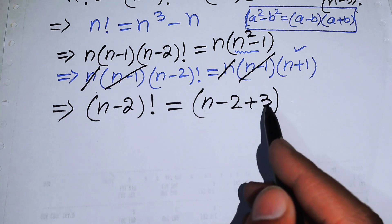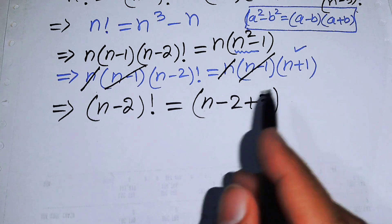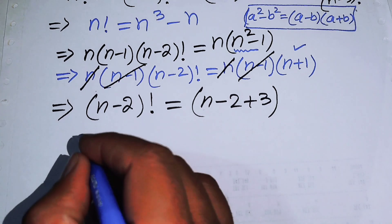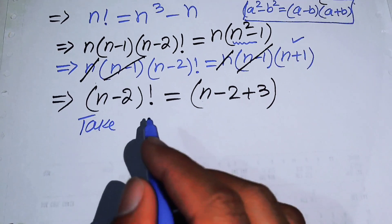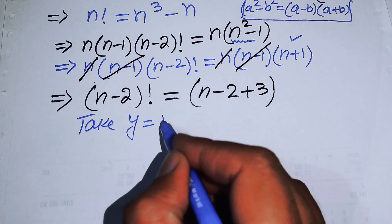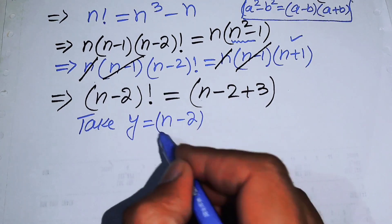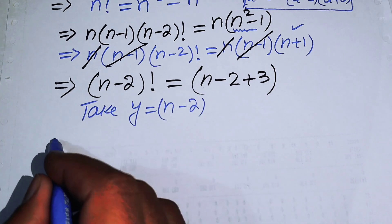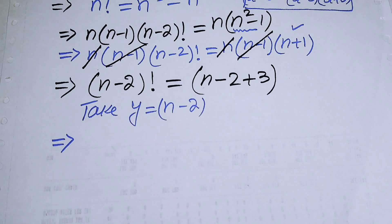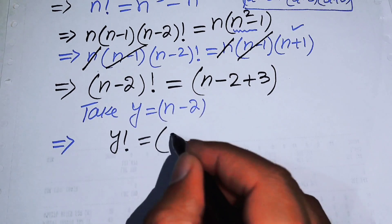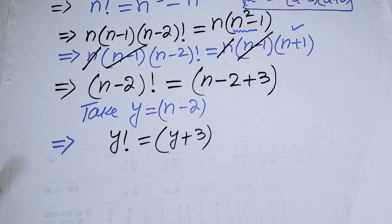Since minus 2 plus 3 equals plus 1, we now substitute y equals n minus 2 in order to convert this equation into its simplest form. When we substitute this value, we get y factorial equals y plus 3.